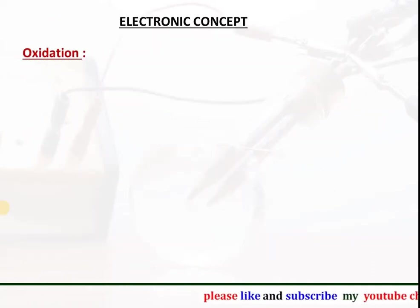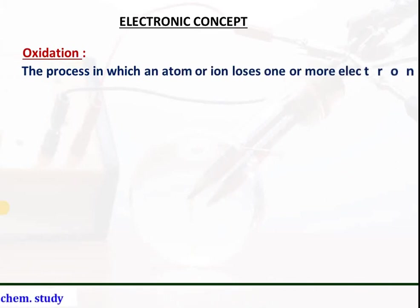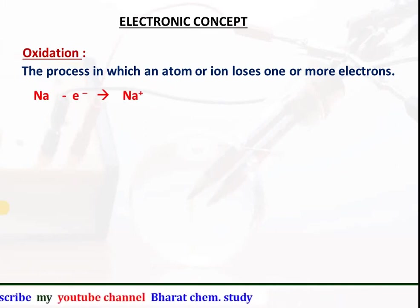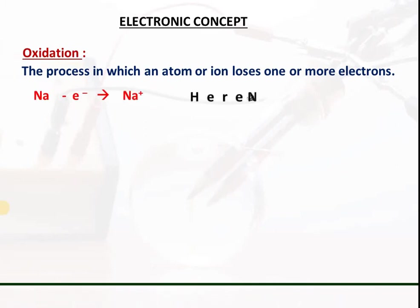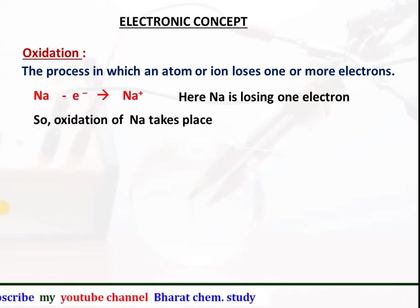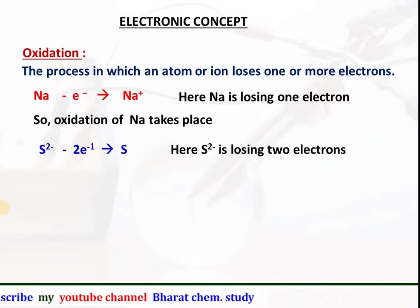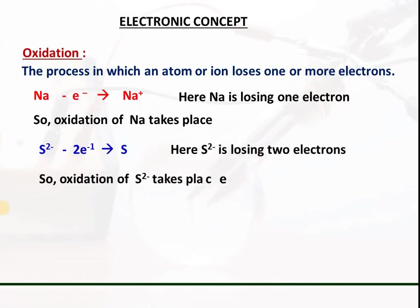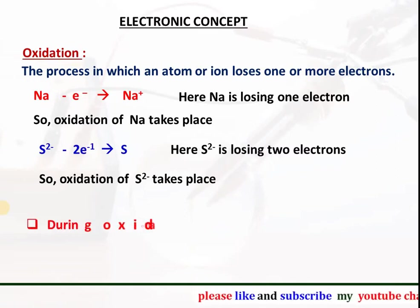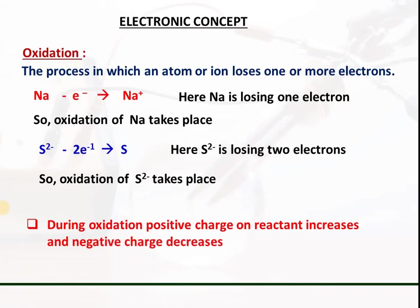Electronic concept of oxidation: oxidation is the process in which an atom or ion loses one or more electrons. For example, when sodium loses one electron it becomes Na⁺ ion — so the oxidation of sodium takes place. In another example, S²⁻ loses two electrons to form sulphur — so the oxidation of S²⁻ takes place. During oxidation, the positive charge on the reactant increases and the negative charge on the reactant decreases.